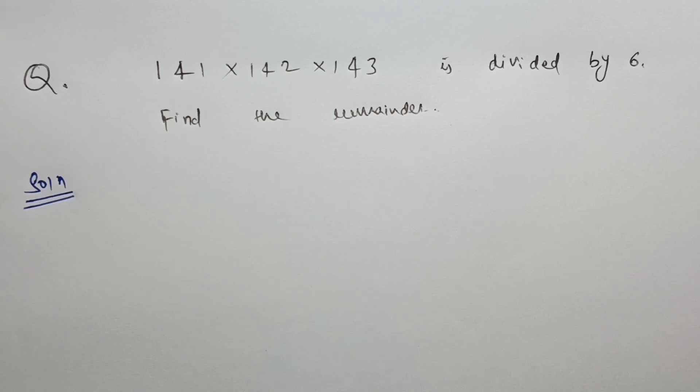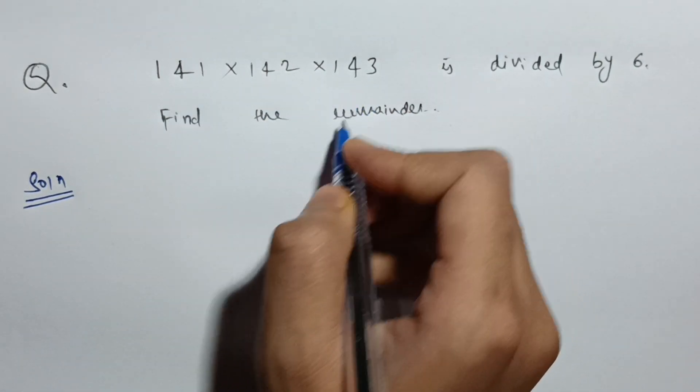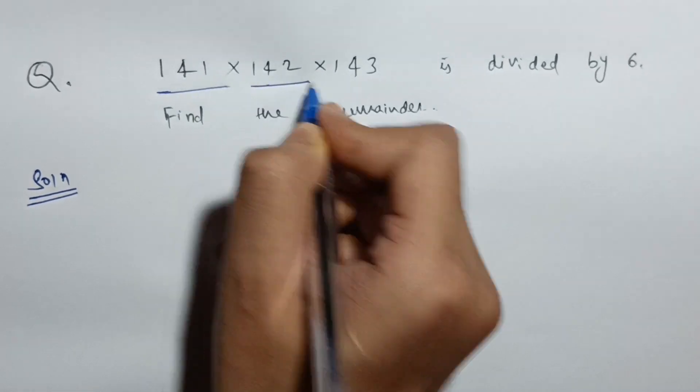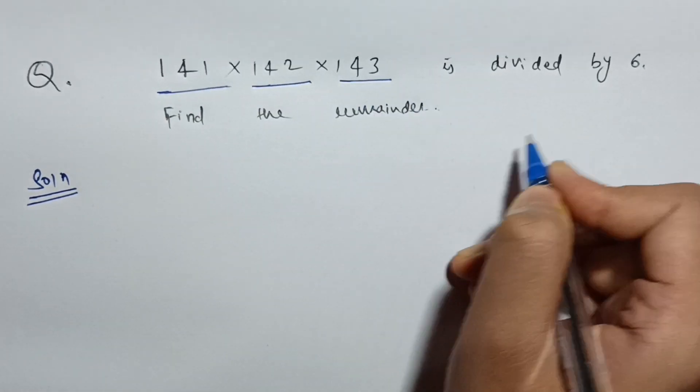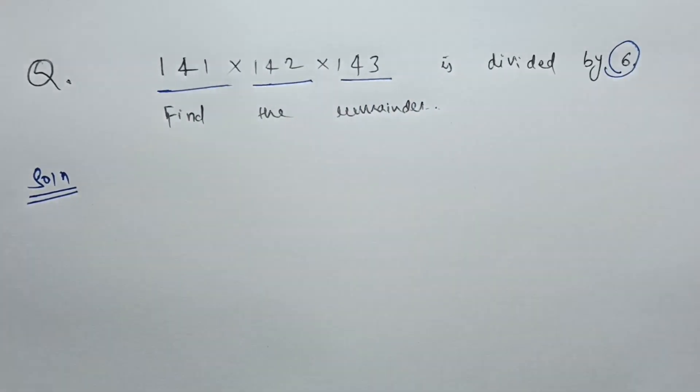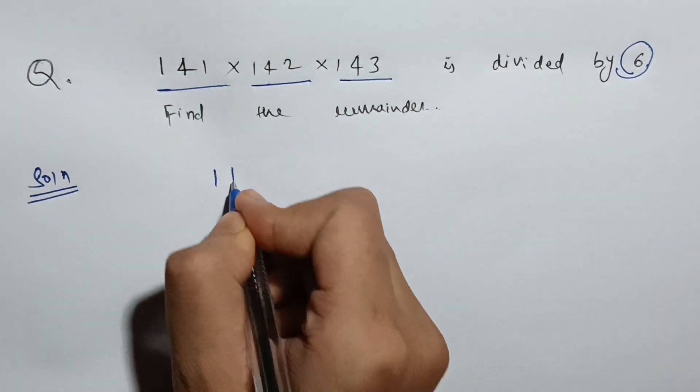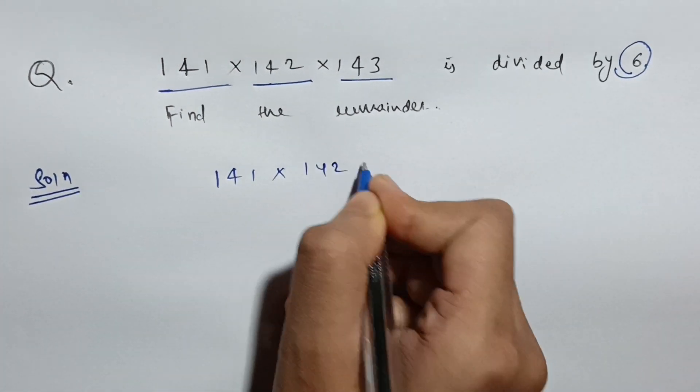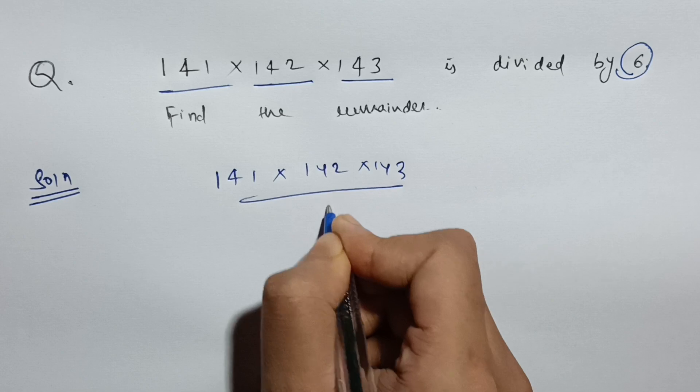In this question we will solve a problem on finding the remainder of a product. We are given 141 × 142 × 143 and we have to find the remainder when it is divided by 6.